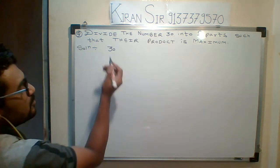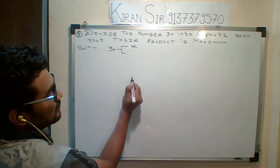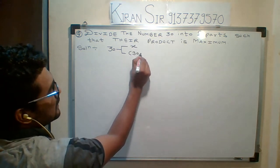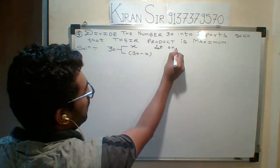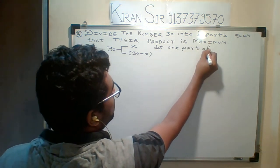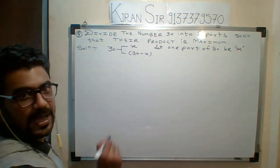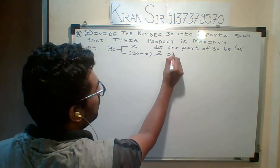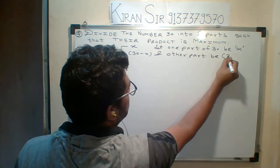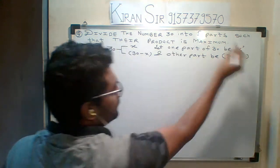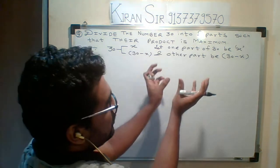That's why I don't know the pair, so I will take one pair be x and the second pair will be 30 minus x. Let one part of 30 be x, and the other part be 30 minus x.